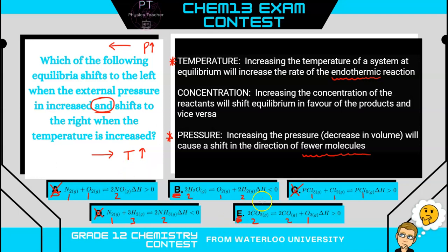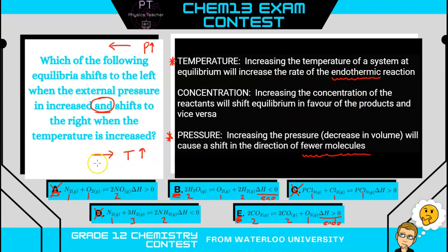Let's look at temperature increase. For B, the enthalpy is less than zero, so the forward reaction is exothermic. For E, the enthalpy is greater than zero, so the forward reaction is endothermic. With temperature increasing, we favor the endothermic reaction. So the answer is E, not B.